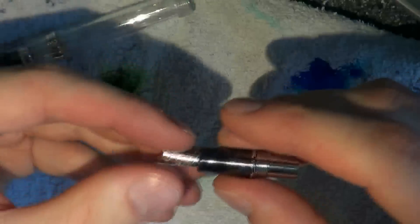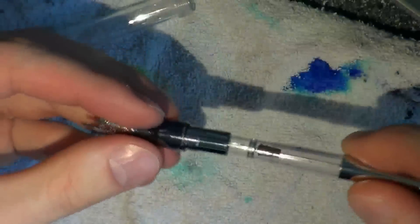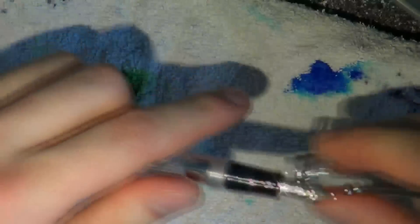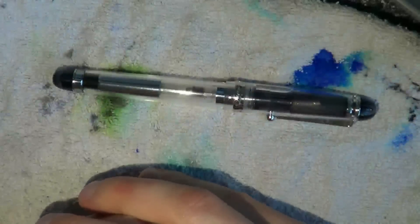Screw the nib unit back in place. Put the converter in. Make sure it's in all the way. Take the barrel, screw it in place. Cap the pen. Sit down and enjoy yourself some haggis.